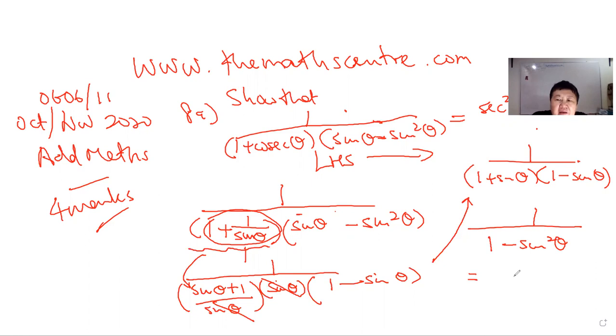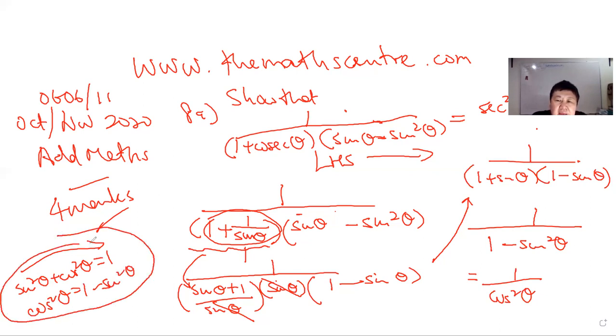So I have 1 over cos squared theta. Remember, sin squared theta plus cos squared theta equals 1. Therefore, cos squared theta is the same as 1 minus sin squared theta. So I replace 1 minus sin squared theta with cos squared theta. And so I work backwards now. 1 over cos squared theta is secant squared theta.